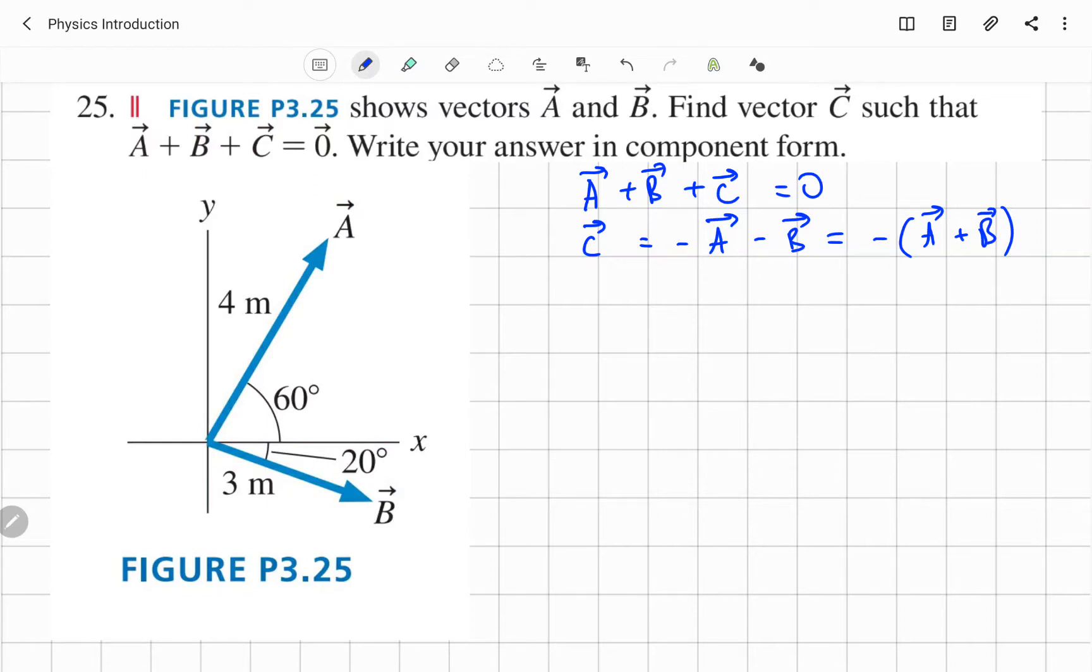So first of all, let's find what is A plus B. A vector given 4 meters, direction is given 60 degrees above the horizontal x-axis. And B vector 3 meters, 20 degrees below the x direction. So let's try to solve it in terms of component method. We need to find first Ax. This is the x component for A, and this will be y component for A. Simple right triangle we have.